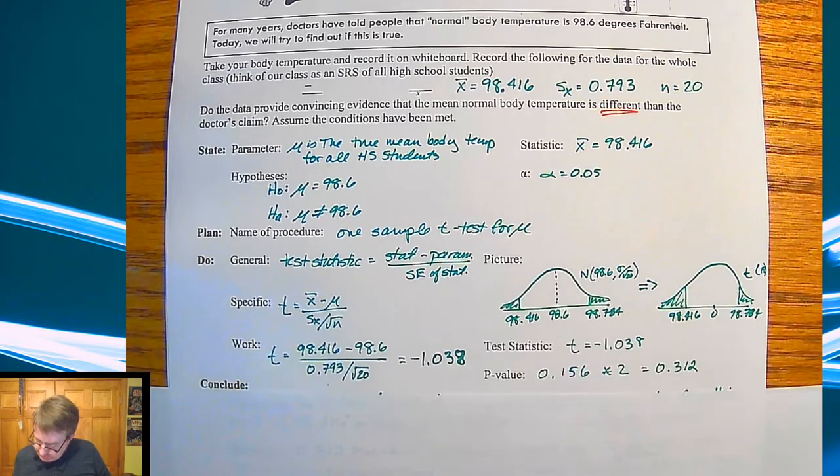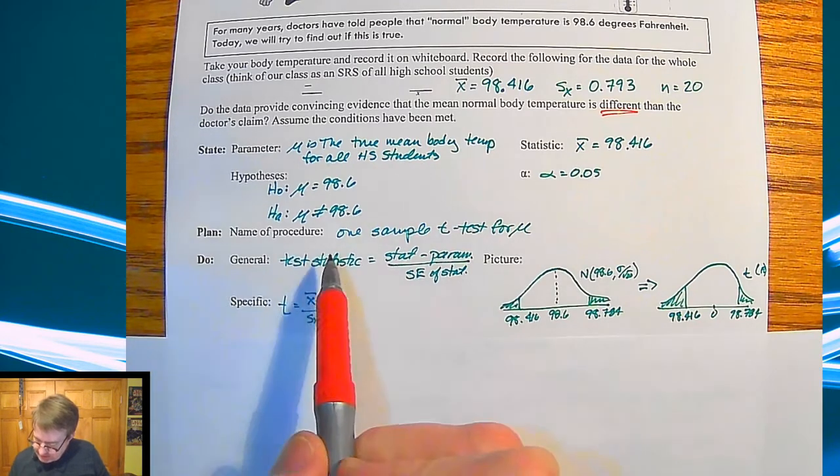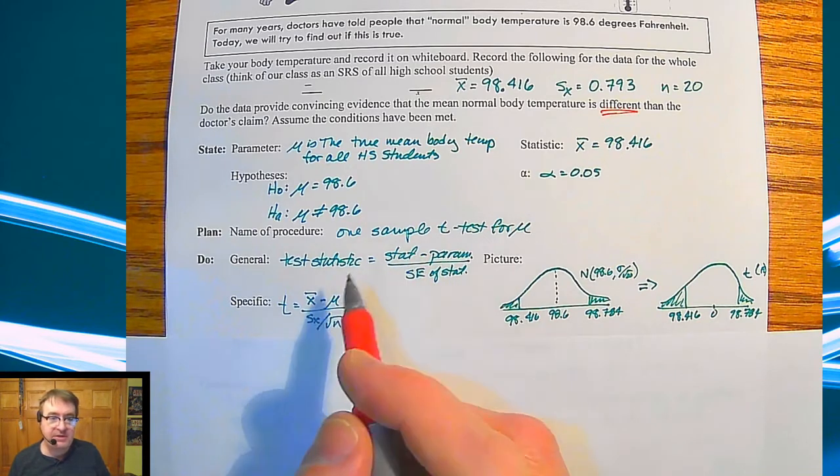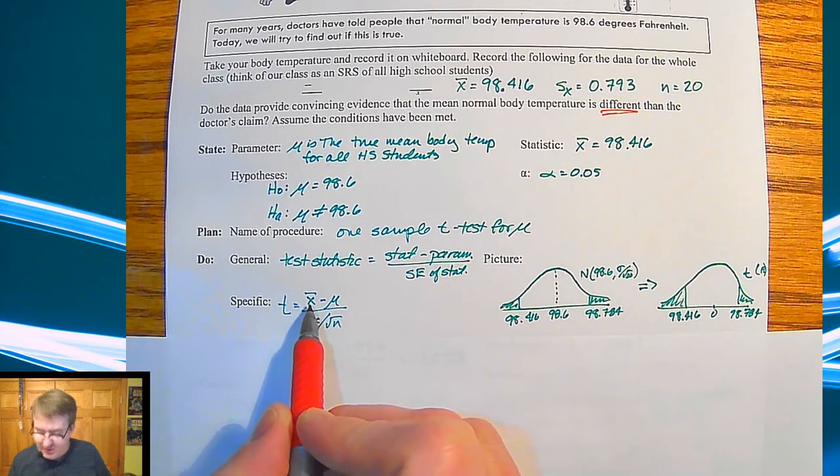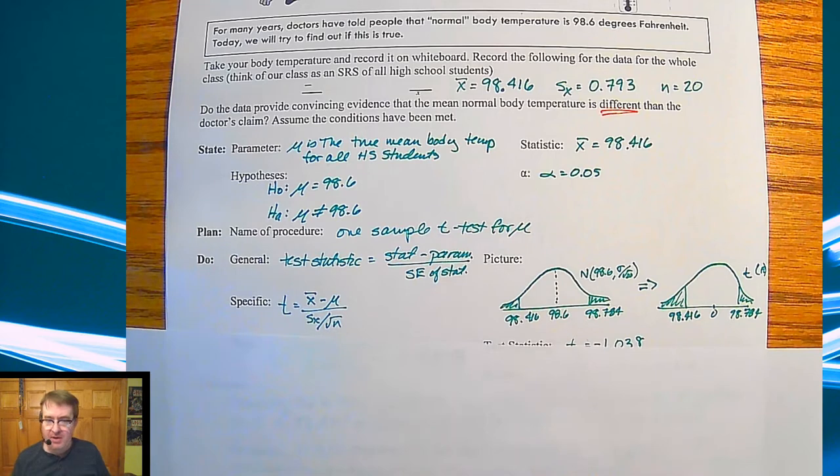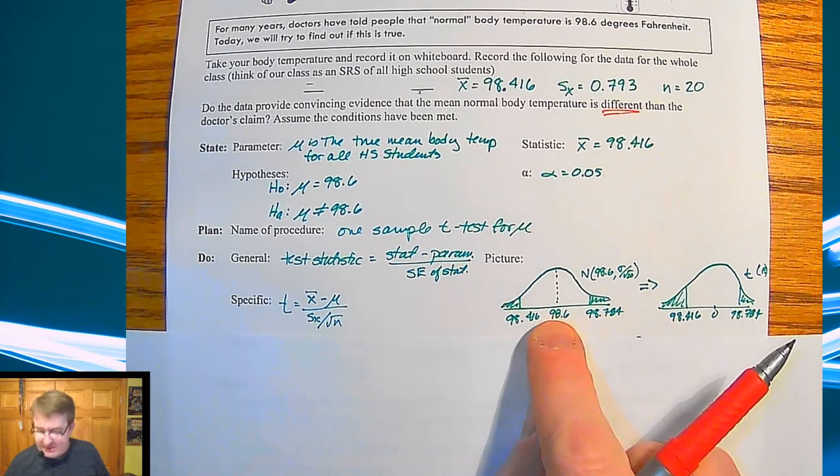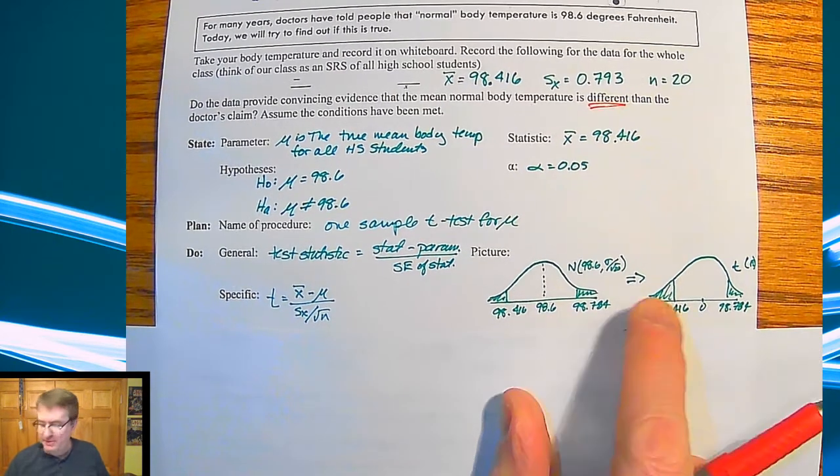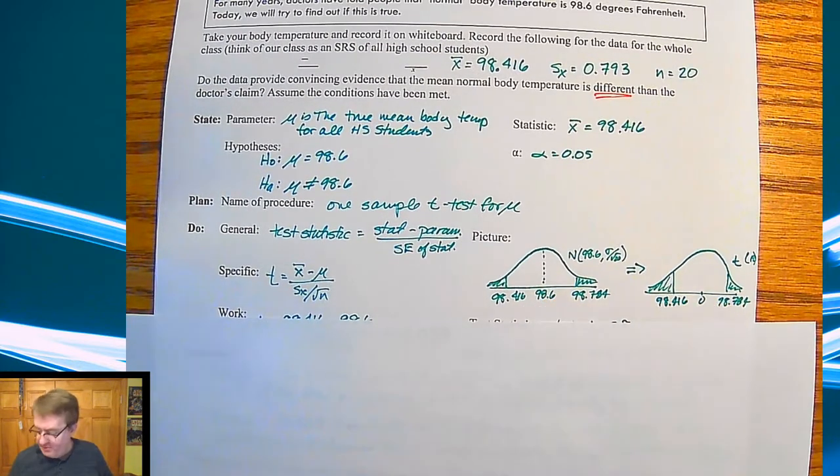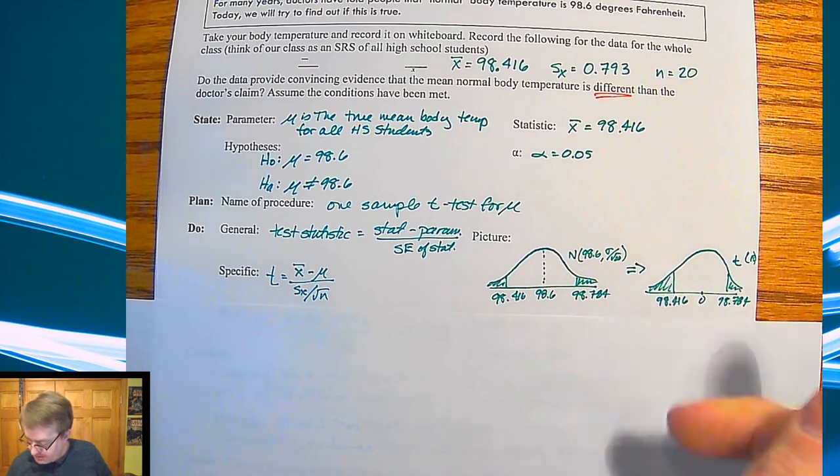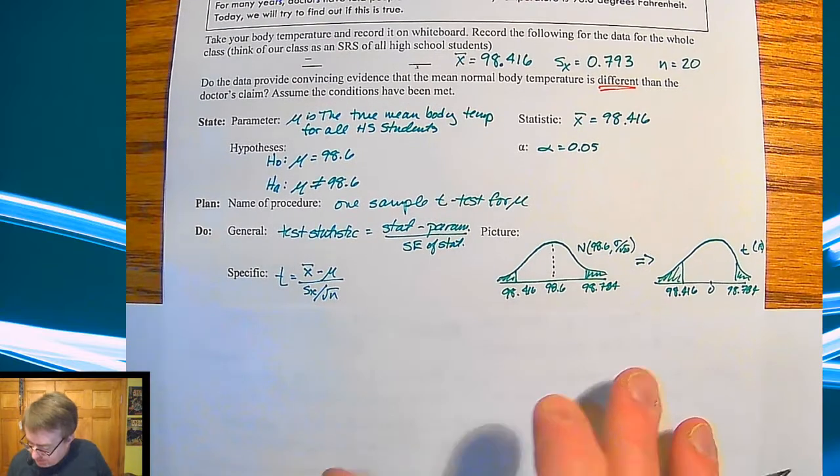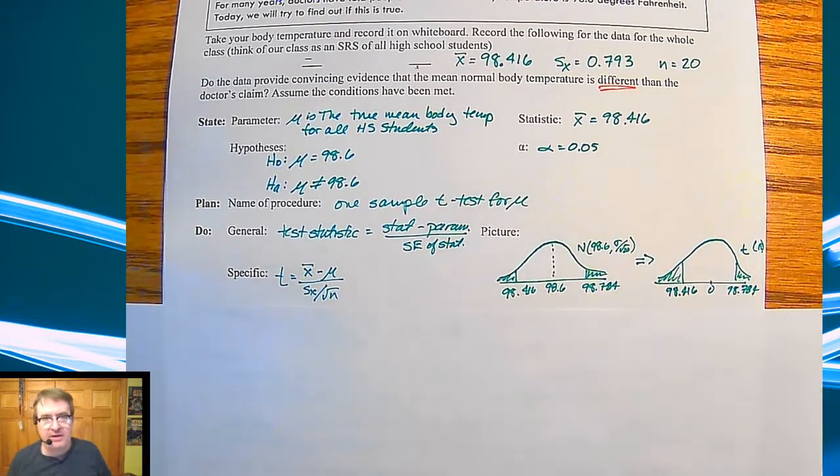Now for the do, lots of stuff. So our test statistic, just like before: statistic minus a parameter divided by our standard error of the statistic. Here is the specific one: t equals x bar minus the mean, divided by my standard deviation of the sample, divided by square root of n. Quickly over here, this is what we've been doing before. This is what we're going to be doing now. Notice how similar these things are. The reason why we're doing this is because obviously, the bigger the sample, the closer it's going to get to an actual normal curve.